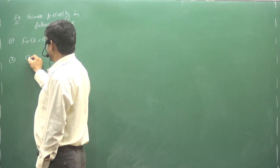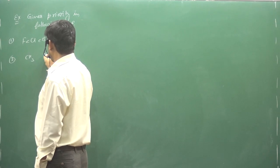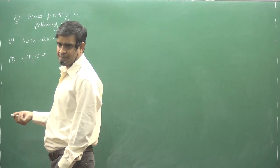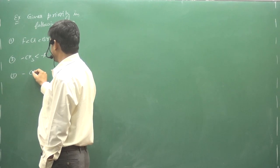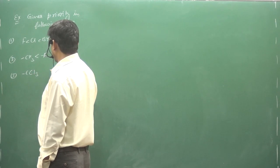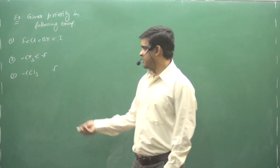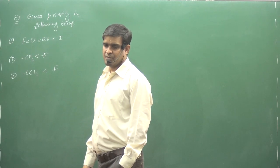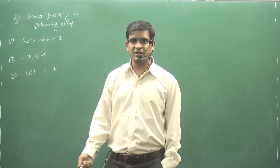Second, who will be priority in CH3 and fluorine? Third, who will be priority in CCl3 and F? Who will be priority in F? First atom, we have to see. First atom, how much are we talking about? If the first atom is tied, then change the rule.